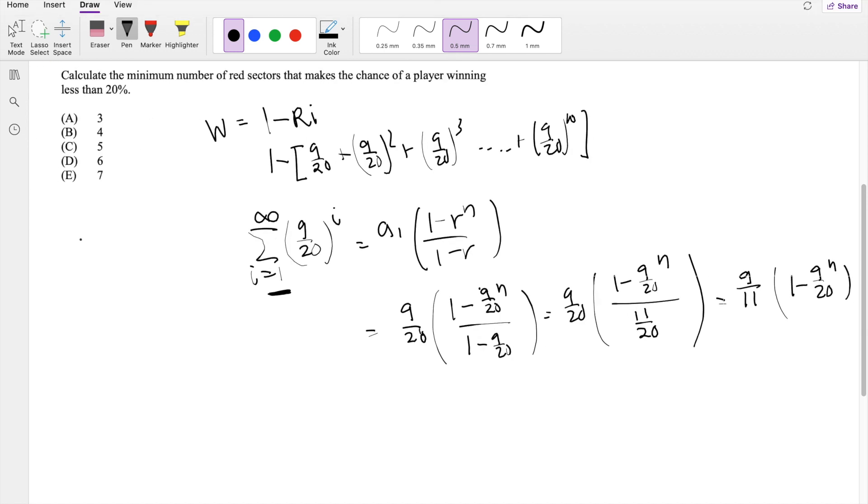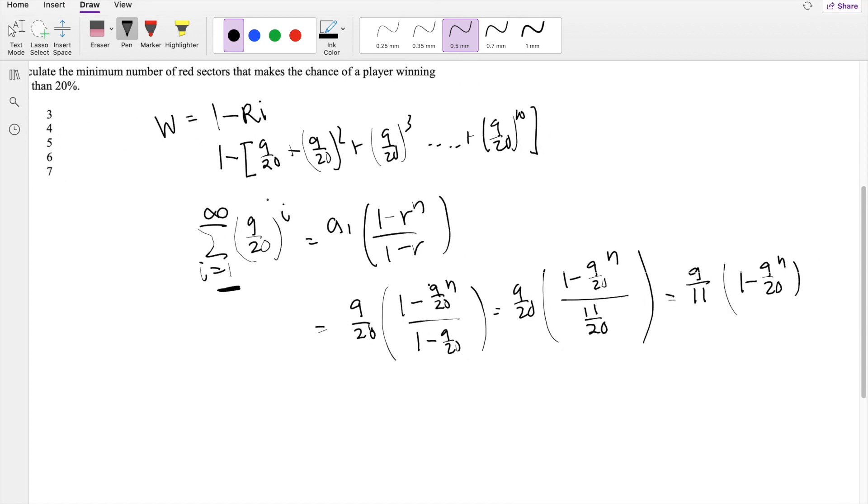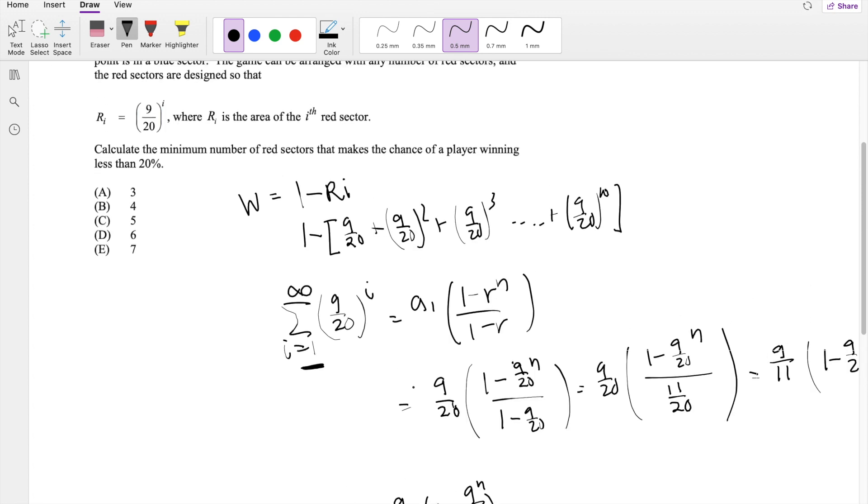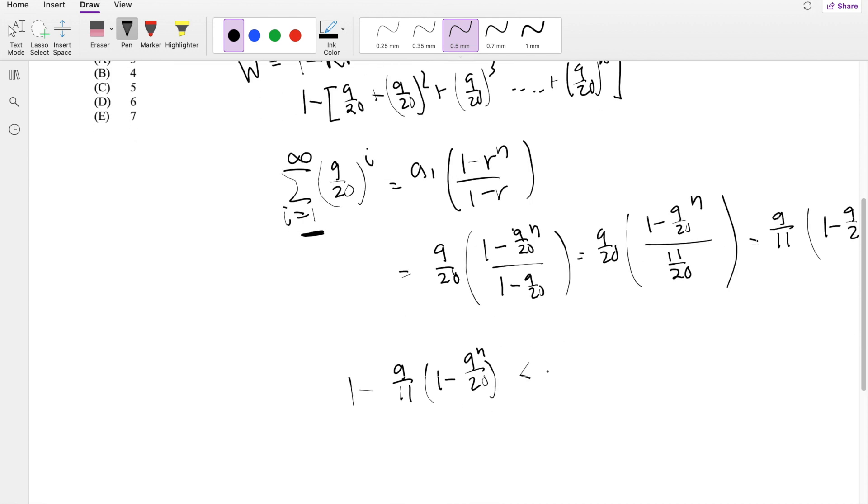How can you win? You can win with 1 minus this, right? 1 minus 9 over 11 times 1 minus 9 over 20 to the N. You want the probability of player winning to be less than 0.2.